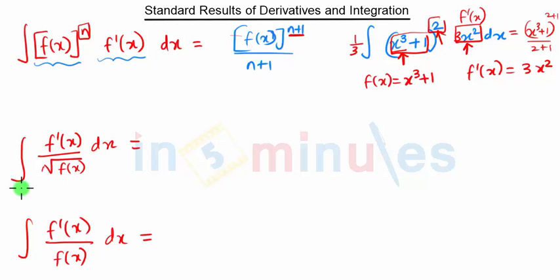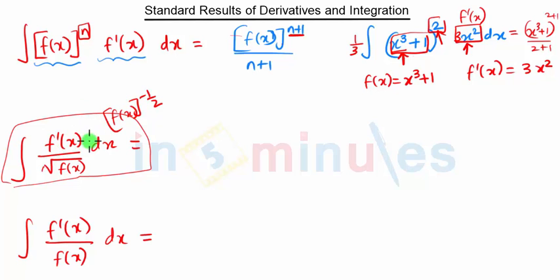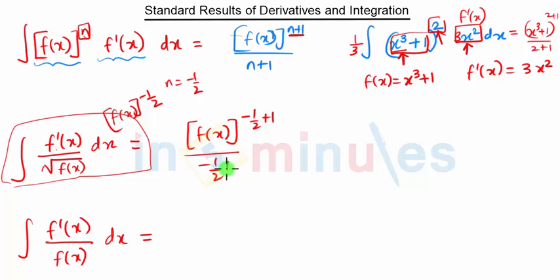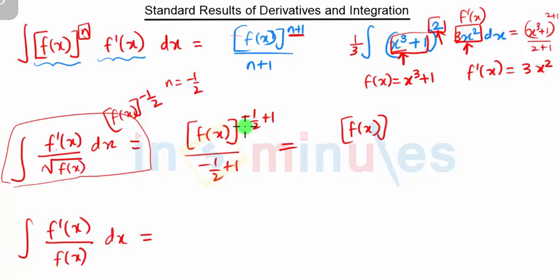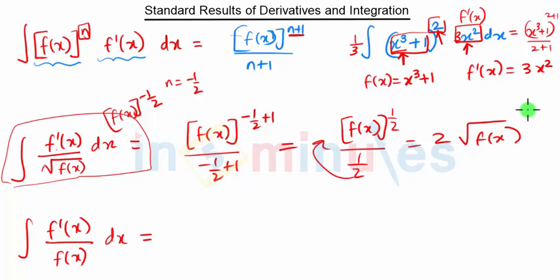Based on the same formula, we have the case of f'(x) / √f(x). Here √f(x) in the denominator is f(x)^(−1/2) in the numerator, so this becomes f'(x) · [f(x)]^(−1/2). With n = −1/2, the formula gives [f(x)]^(−1/2+1) / (−1/2+1) = [f(x)]^(1/2) / (1/2) = 2√f(x). So the direct integration of f'(x)/√f(x) is 2√f(x).